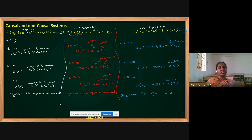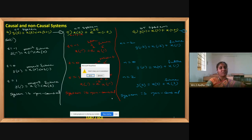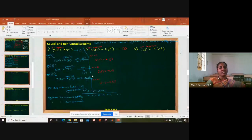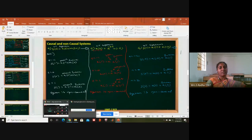All the problems we have seen so far are non-causal only. Now let's look at a causal system example.